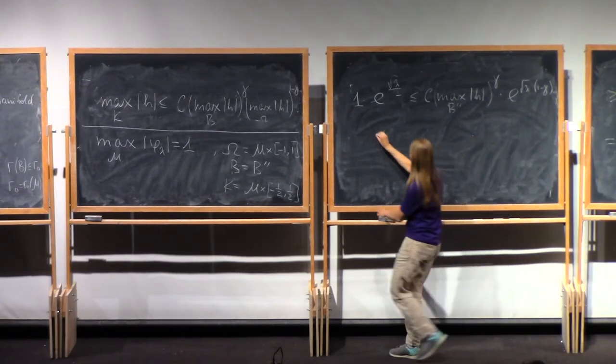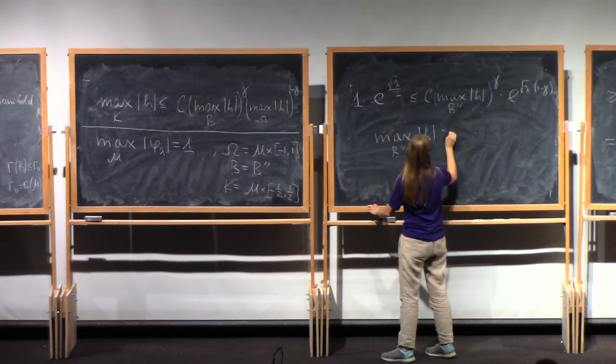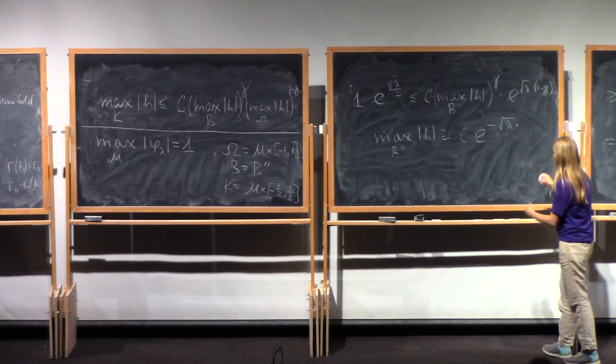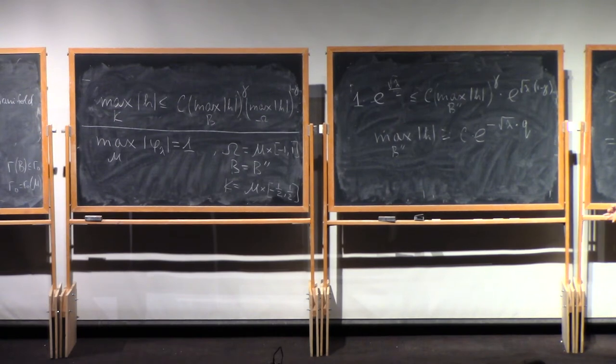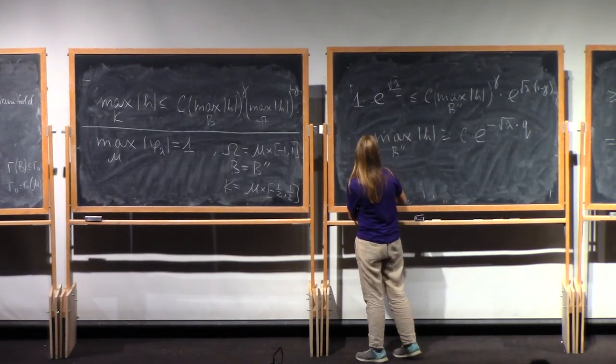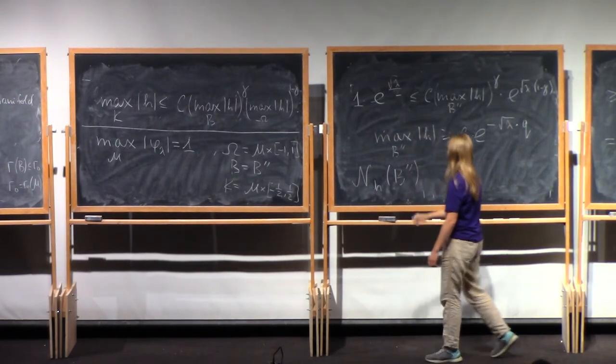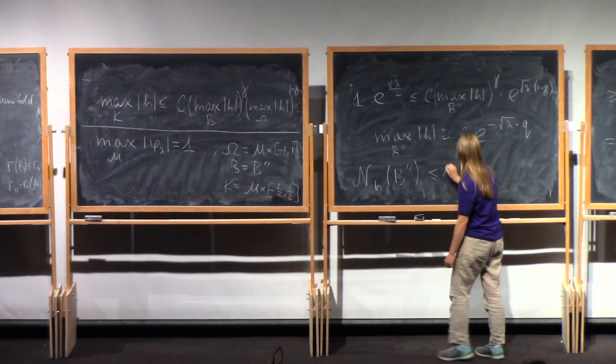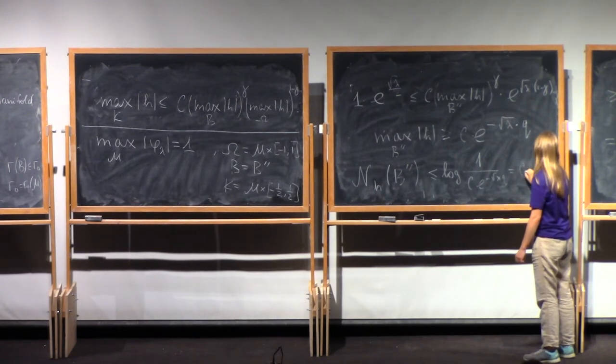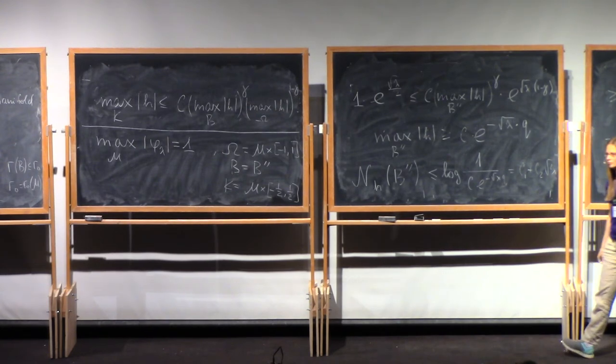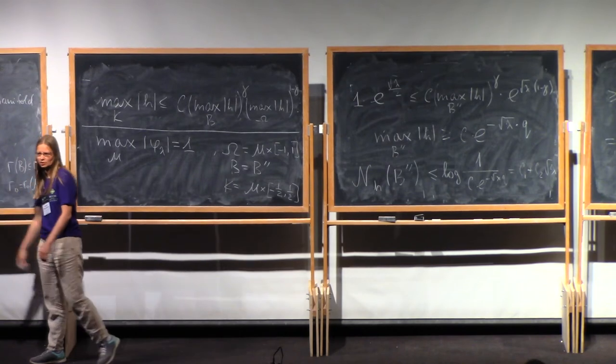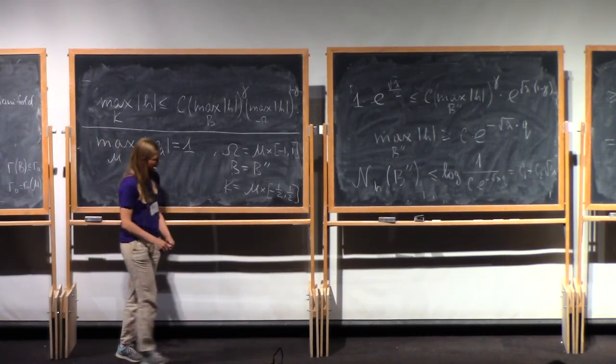And it tells you that the maximum over the ball is at least constant e to the square root of lambda times some constant q. So the global maximum is equal to 1. The maximum over this ball is at most this one. It means that the doubling of function h over the ball b 2 prime is bounded by log of 1 over this one. I didn't write this additional constant here, but we know that eigenvalues are positive, so it doesn't matter there.